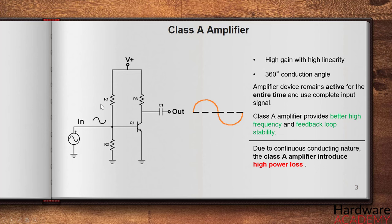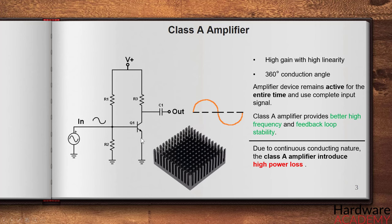So we mentioned that class A amplifier has high power loss. This means that it emits heat and requires heat sink space which sometimes is not available.